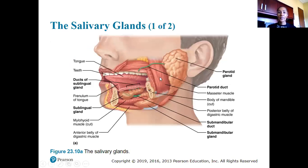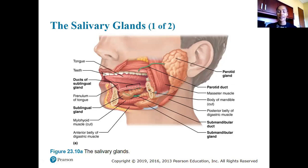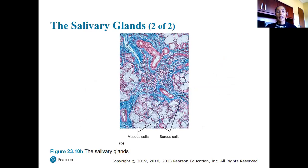Here is a diagram showing the salivary glands. The large parotid salivary gland is located outside of the oral cavity. Then we have the sublingual gland and the submandibular gland — all of these glands located outside of the oral cavity.